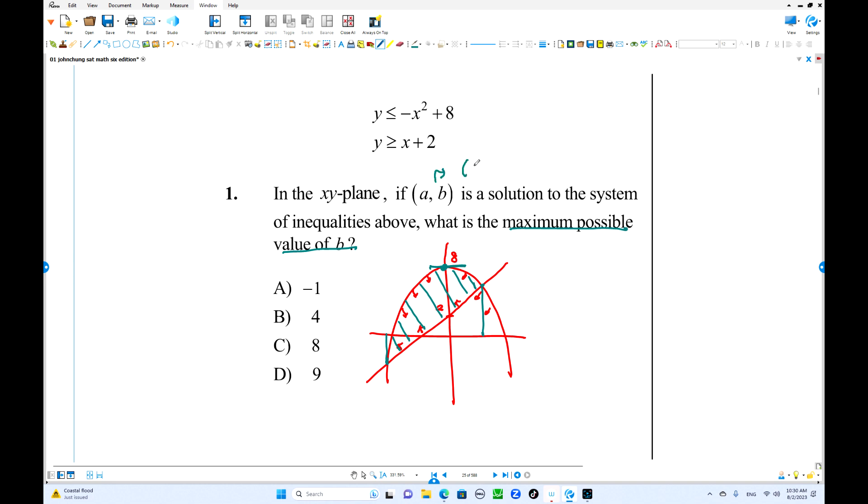So in this case, what is the value of B? This point will be when A equals 0, B is 8. This point has a maximum value of B. So choice C is the answer. So always we think about where is the solution set, especially when you have a quadratic. You're going to be careful. So I'll see you in next video. Thank you, everybody.